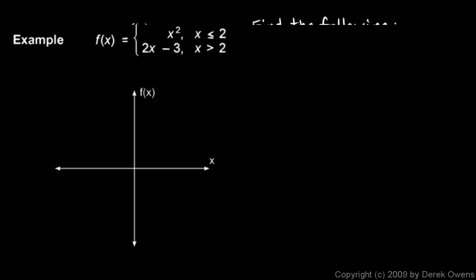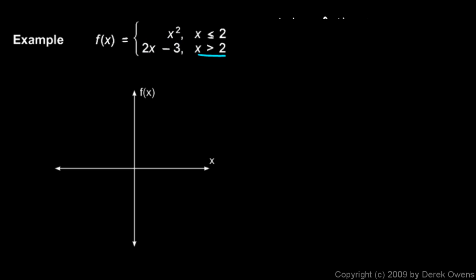Here's another example involving a piecewise function. f(x) equals x² when x ≤ 2, and 2x − 3 when x > 2. The goal is to graph the function and discuss the limit at x = 2. Notice that x = 2 is the point where the definition of the function changes — it's one thing when x is less than 2 and another when x is greater than 2, so this is where the interesting behavior occurs.